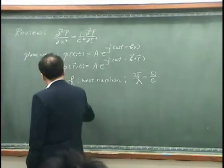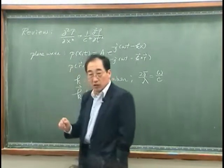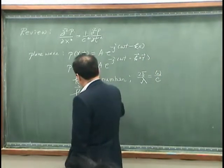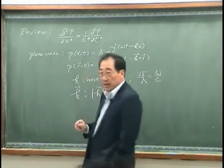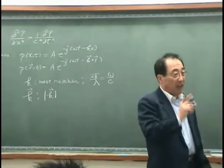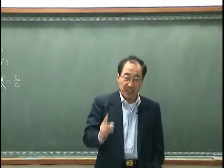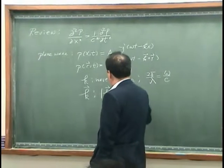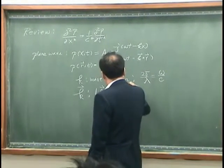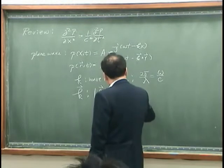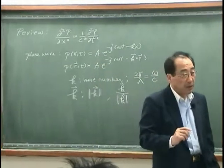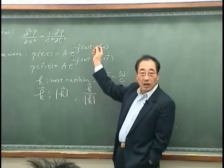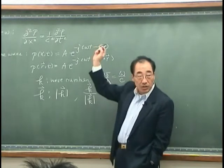But the wave number k is no longer a scalar — it is a vector. The magnitude of k is a scalar and it represents the number of waves per unit length. The direction of k, expressed as the directional wave number, indicates the direction of wave propagation.